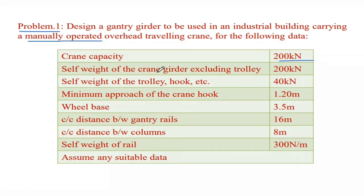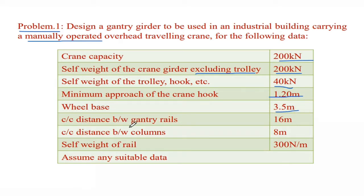Given data: Crane capacity is 200 kN. Self-weight of the crane (excluding trolley) is 200 kN. Self-weight of trolley, hook, etc. is 40 kN. Minimum approach of crane hook is 1.20 meters. Wheelbase is 3.35 meters. Center to center distance between gantry rails is 16 meters. Center to center distance between columns is 8 meters. Self-weight of rail is 300 N/m.